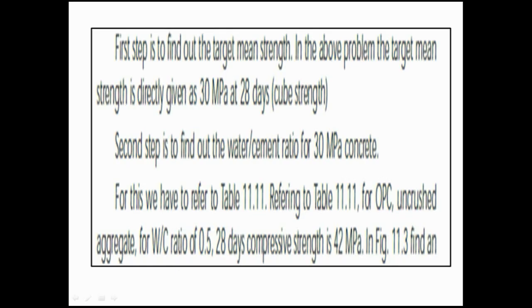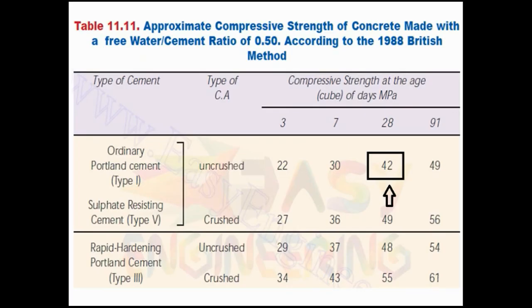In the first step, we need not calculate the target mean strength as mentioned earlier. In the second step, we are going to calculate the water-cement ratio for 30 MPa with the help of table number 11.11 and one curve. They haven't given the type of cement, so we are using OPC. This is table number 11.11, where the type of cement is ordinary Portland cement and the type of aggregate is uncrushed. For 0.5 water-cement ratio at 28 days, the table gives 42 MPa strength. Our aim is to calculate the water-cement ratio for 30 MPa.